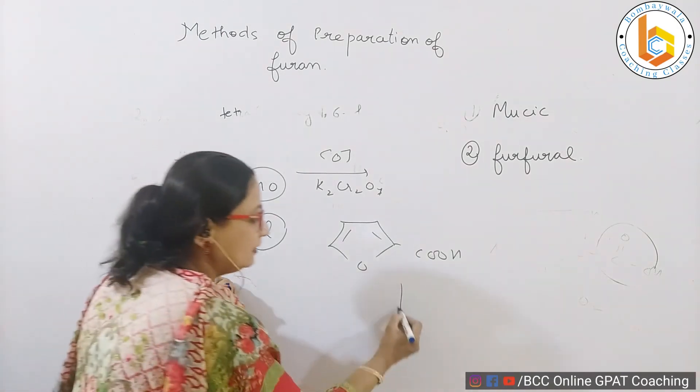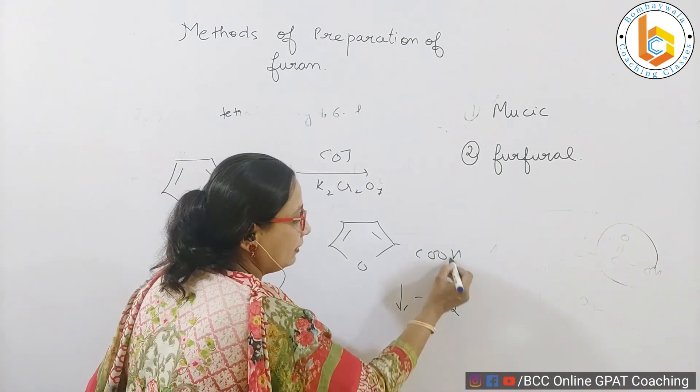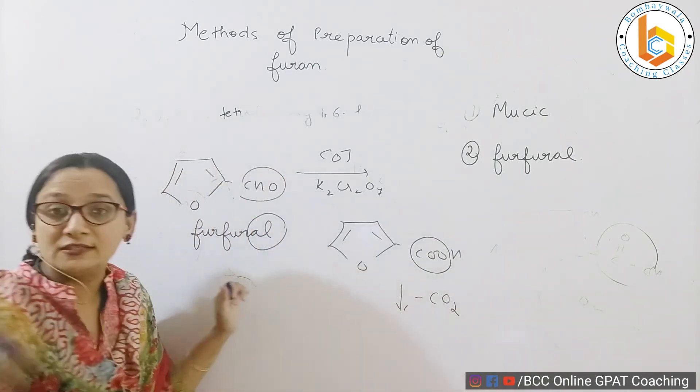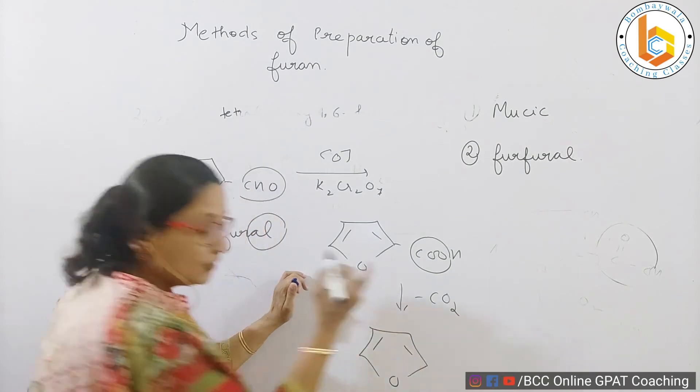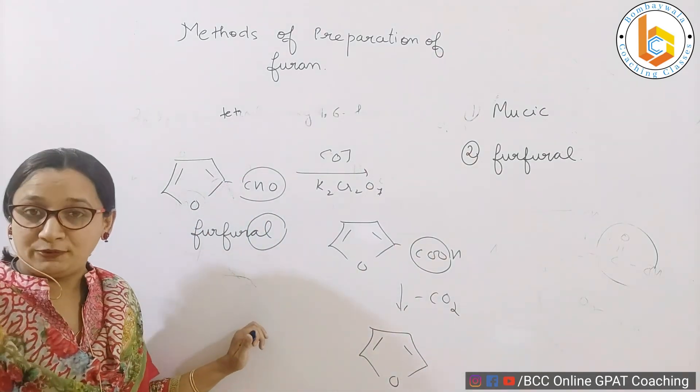Once you get a furoic acid, it will undergo decarboxylation, that is loss of carbon dioxide, and what remains is furoic acid. So these are two methods of preparation.